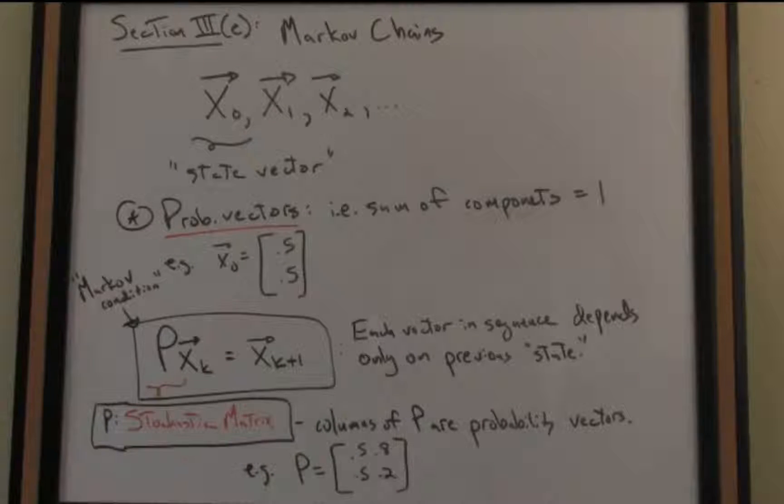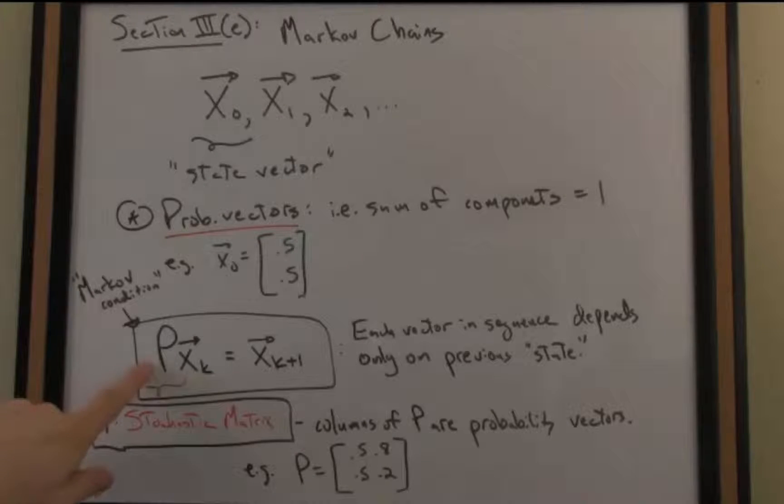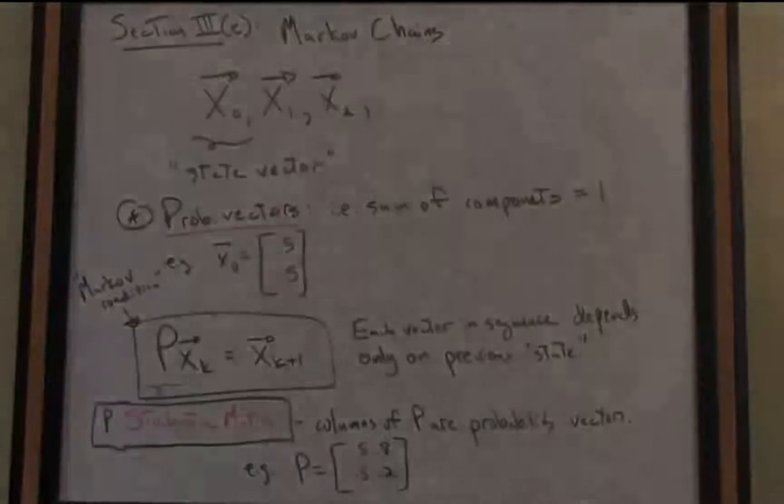So we can say this dynamical process has a short-term memory. We're only looking at the previous state. We then multiply by this matrix P, this stochastic matrix, and then we establish what the next state in the chain is.